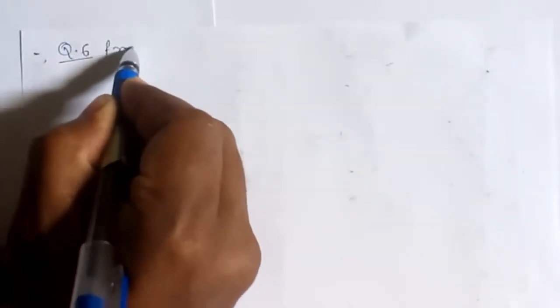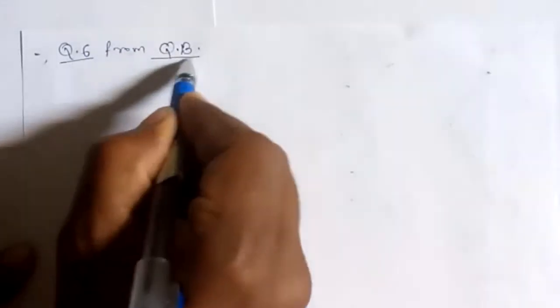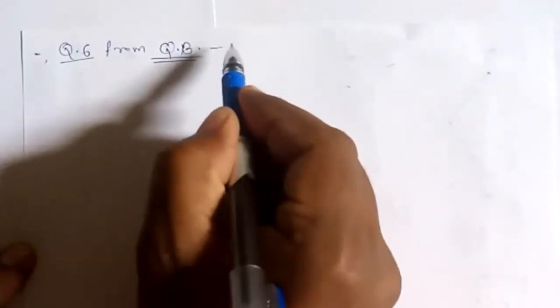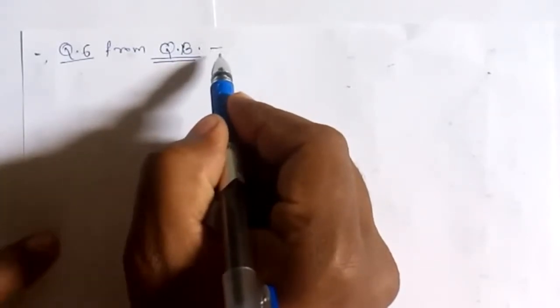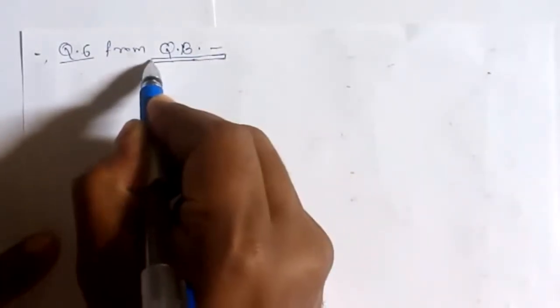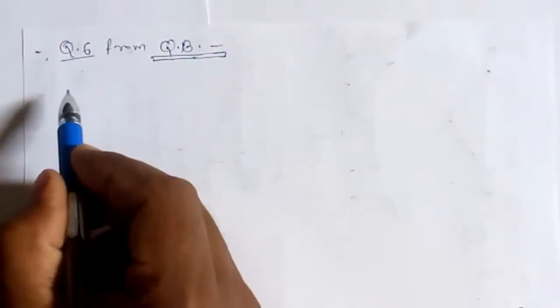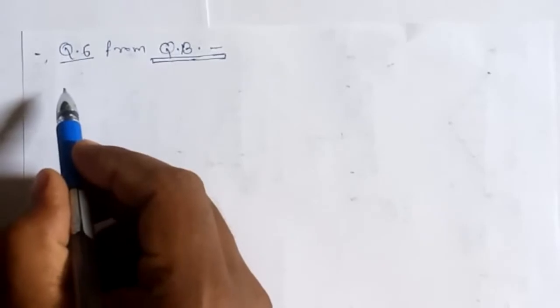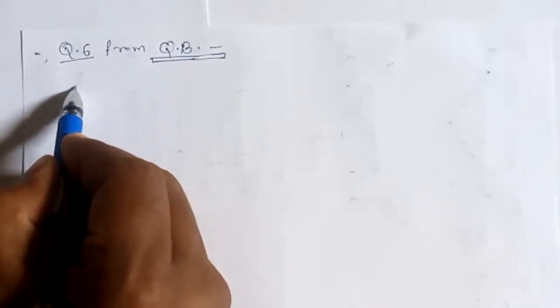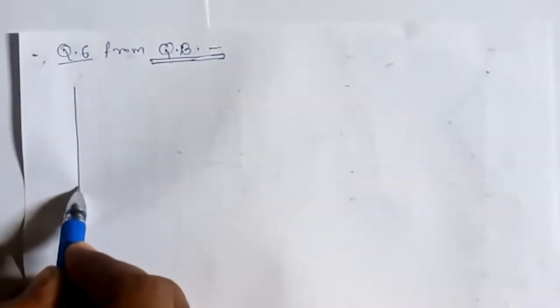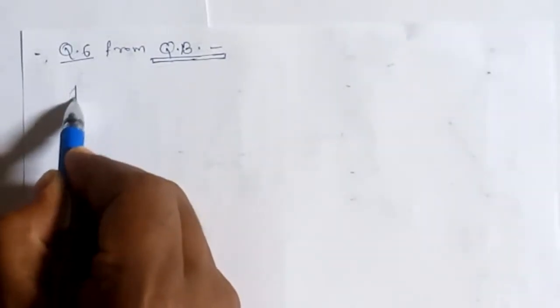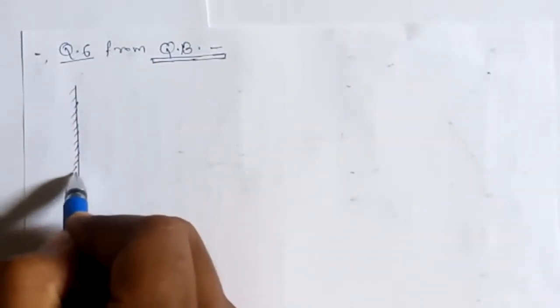Now let us move to question number 6 from the question bank. The diagram from the question shows a vertical wall with a pin joint, a boom attached to that pin joint, and a cable supporting the free end of the boom attached also to the wall.